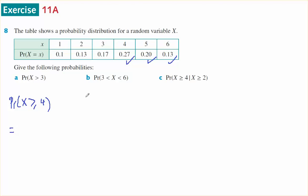So it's going to equal 0.27 plus 0.20 plus 0.13. Zero carry 1, 6. 0.6 will be the answer.